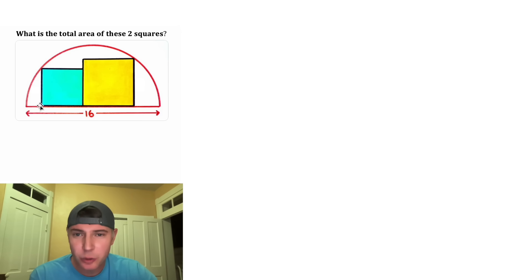First, let's call the sides of this square x and the sides of this square y. And the question's asking what is the total area of these two squares? So we're trying to figure out what is x squared plus y squared.